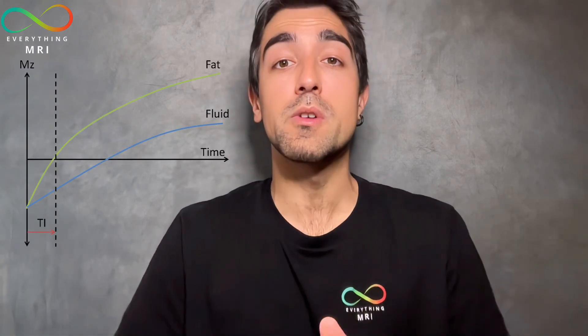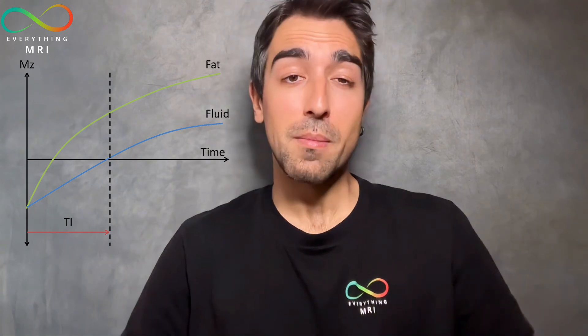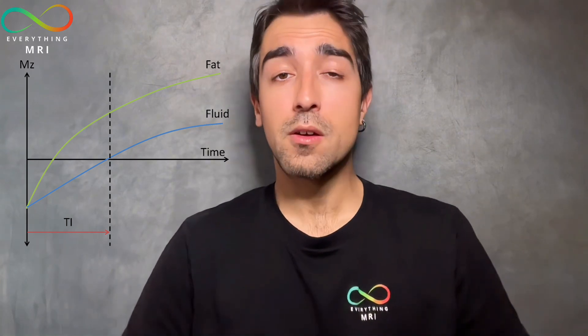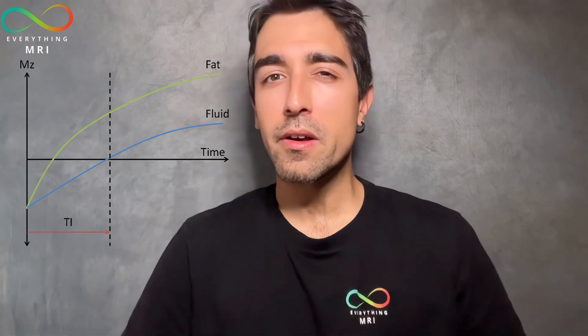Is your goal to suppress fat? Choose a STIR sequence with a short TI, usually around 150 ms at 1.5 Tesla. Is your aim instead to suppress fluids like the CSF? That's where the FLAIR sequence shines. The CSF has a much longer T1 than fat, requiring a longer inversion time, usually around 2500 ms at 1.5T. Exact TI values might vary slightly between scanners and radiologists' preferences, so do not panic if your protocols are saved with slightly different TI values.